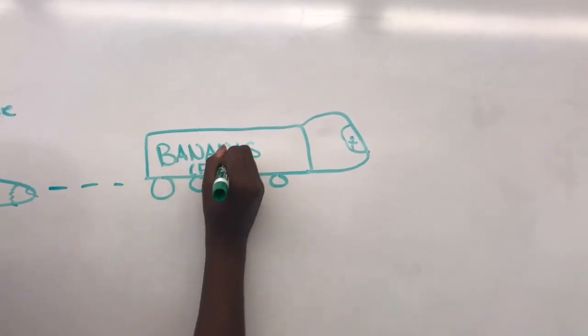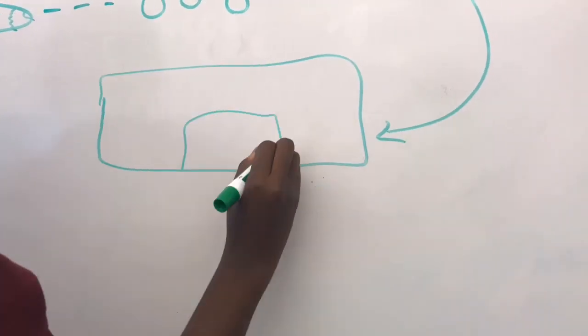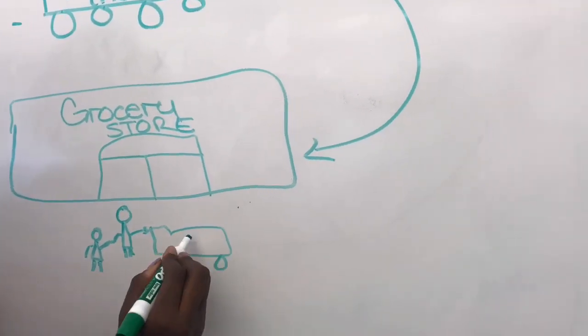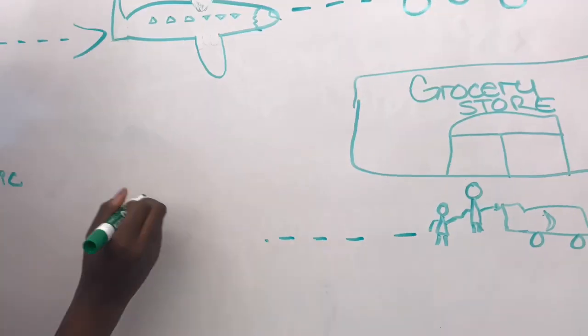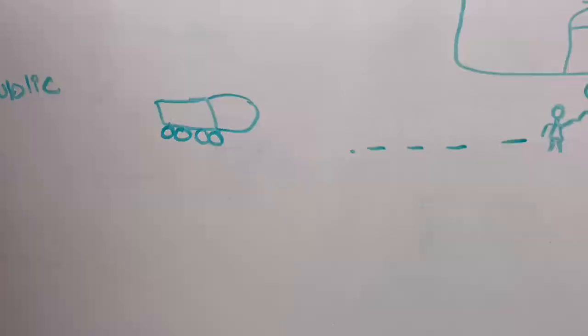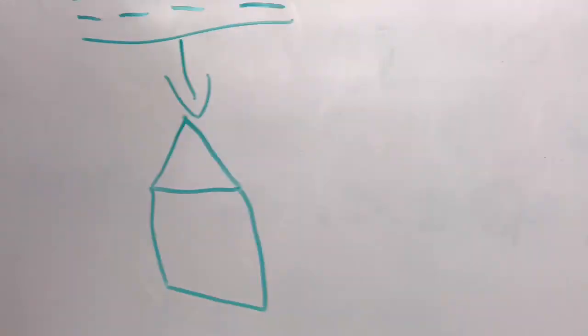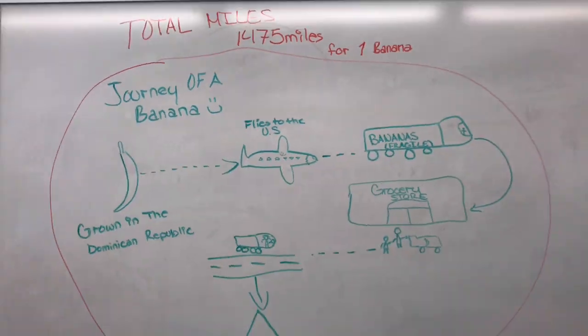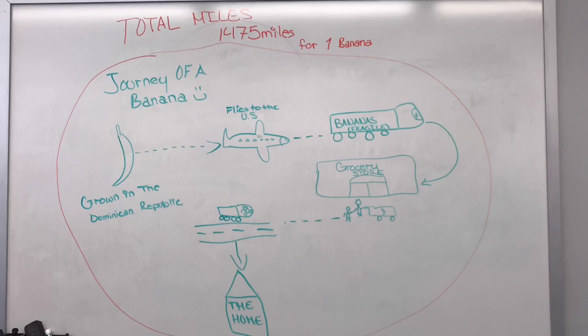Food deserts are urban areas in which it is difficult to buy affordable or good quality fresh food. The largest food desert in the U.S. is actually New York City. This affects upwards of 3 million New York citizens and is caused by the small profit margins of grocery stores competing with fast food chains, space restrictions and rising rent prices preventing the operation of full service supermarkets.